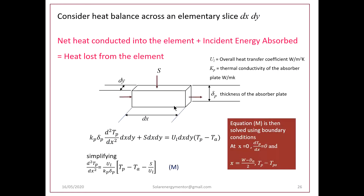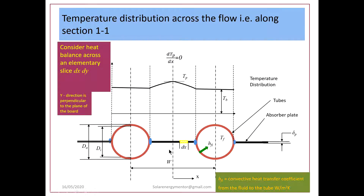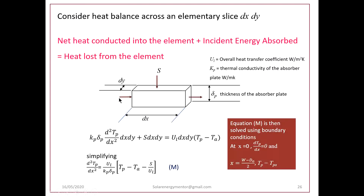This slice is enlarged here. Solar heat is incident on this surface. The dimensions are dy, dx, and δ_p (thickness of the absorber plate). The heat balance states: net heat conducted into the element plus incident energy absorbed equals heat lost from the element, which equals heat loss from the element to the fluid.